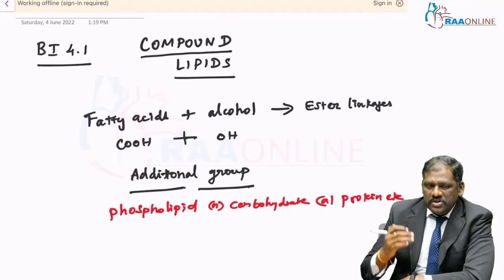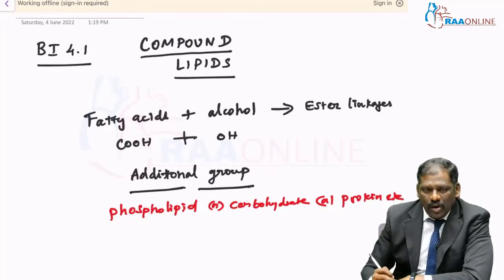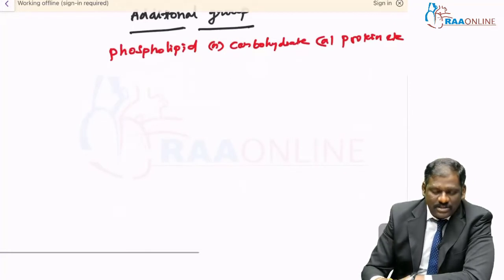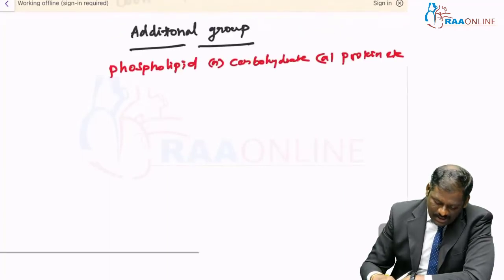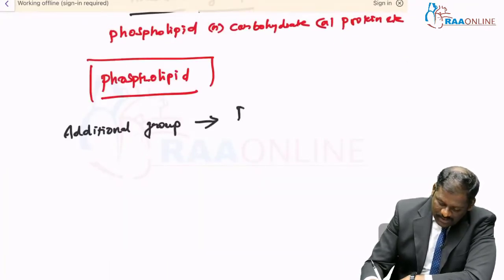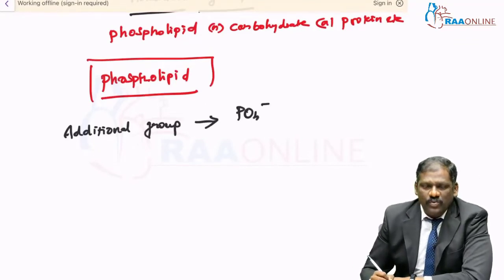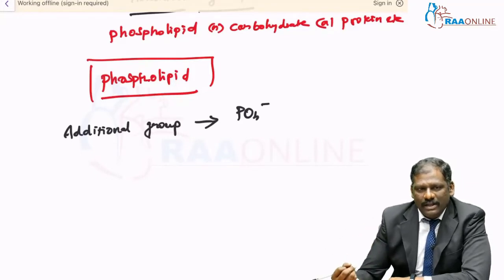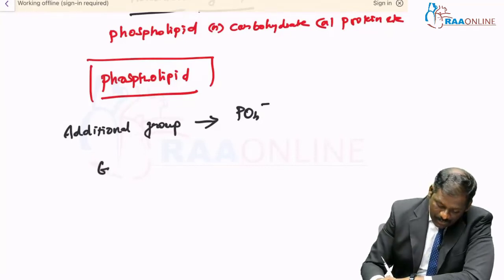With respect to this additional group, you get the name for compound lipids. So if the additional group shows the presence of a phosphate, then this is called a phospholipid. If the additional group is a carbohydrate, then you call this a glycolipid.